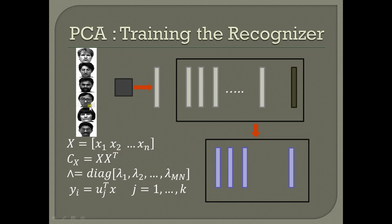We calculate the eigenvectors of this autocorrelation matrix. Thus, for an image of dimension m by n, we get mn eigenvectors. But if we use all mn dimensions for the comparison, that increases the computation time. So we extract only the key dominant features among these mn eigenvectors and use them as principal components for recognizing an unknown image. After extracting the k dominant eigenvectors, we calculate the projection of the entire training set on these eigenvectors and calculate the weight vectors for each image in the database.